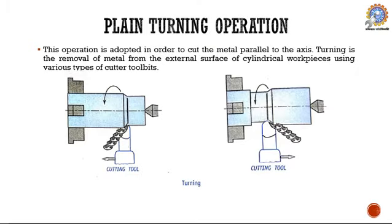Plane turning operation is adopted to cut metal parallel to the axis. The tool moves parallel to the rotating axis, and a small feed is given perpendicular to the axis so that a small amount of material is removed per revolution, reducing the diameter of the workpiece. In facing, length gets reduced; in turning, the diameter of the workpiece is reduced. Metal removal is possible from both the right and left hand sides.